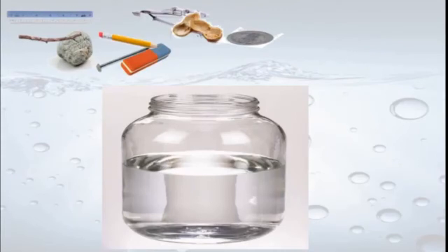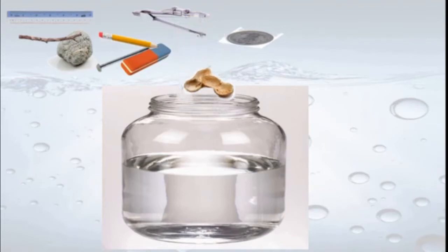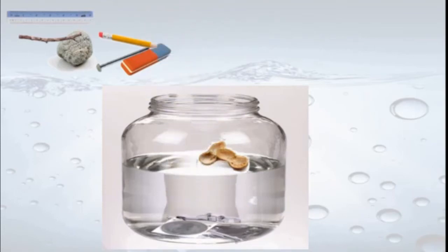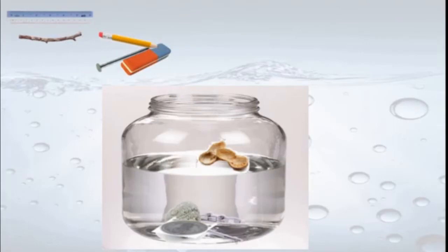Now we will do one more experiment. I have taken some different substances and a half jar filled with water. I will put all these materials one by one in the water. First I will put groundnut shells in the water, then a coin, then a metal compass, then a small stone, and an iron nail.